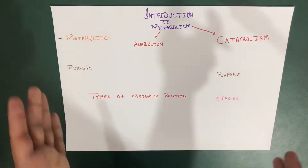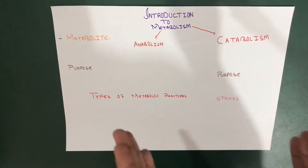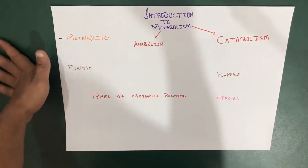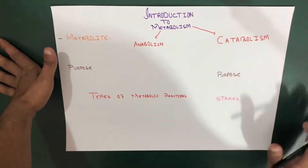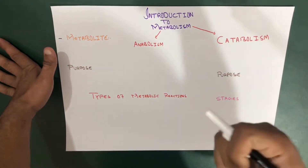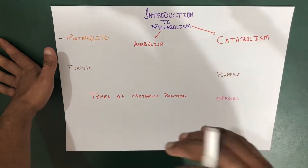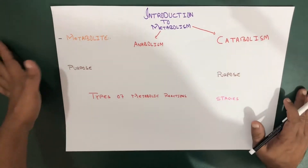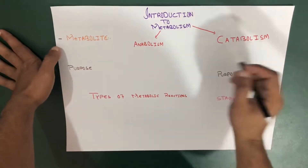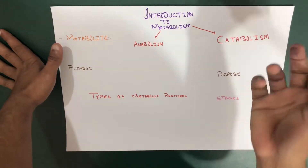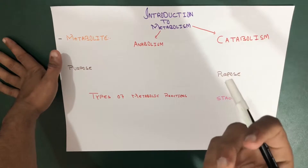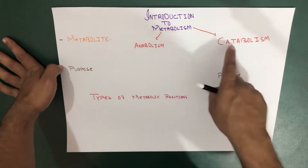Defining metabolism: all the chemical reactions occurring in the living system are collectively called metabolism. The reactions are going on all the time in our body. For example, you're eating meat — this meat is going to break down into small protein parts, and that protein is going to break down through catabolism into amino acids, and those amino acids join together to form a particular protein that your body needs, and that process is called anabolism.